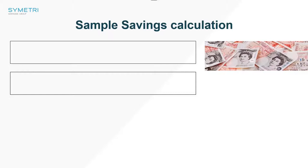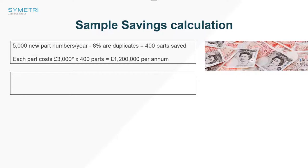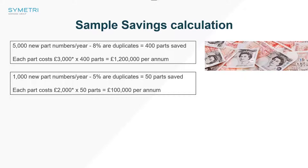You're probably wondering how this applies to you. I knocked together a quick savings calculator. Let's say you have 5,000 new part numbers a year coming into your business and 8% of them are duplicates — you could save 400 parts being brought to market. Using that number of about £3,000 at 400 parts, that's £1.2 million per annum it's costing you to carry these parts. For a more conservative estimate: 1,000 new part numbers a year, only 5% duplicates — you save 50 parts every year at a very conservative £2,000 each. That's £100,000 per annum that you're probably bringing into your design chain without realizing it.